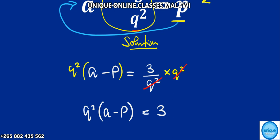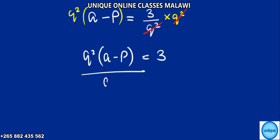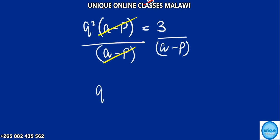Now we cannot multiply that one — they haven't given an ugly factor. So what we're going to do is divide both sides by a minus P. This a minus P will cancel, remaining with Q squared is equal to 3 over a minus P.